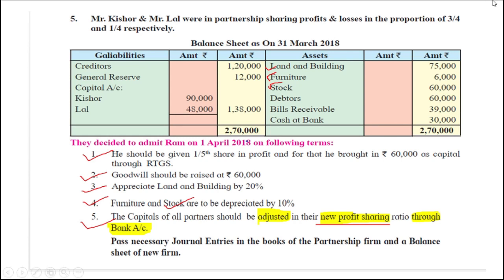Now we will start with this problem. They said pass the necessary journal entry, but here they also said open the balance sheet. That means here you need to pass the journal entry as well as open the ledger, because without profit and loss adjustment and without the partner's sector you cannot tally your balance sheet. So here you need both journal entry and ledger. Goodwill should be raised and the liability capital adjusted.